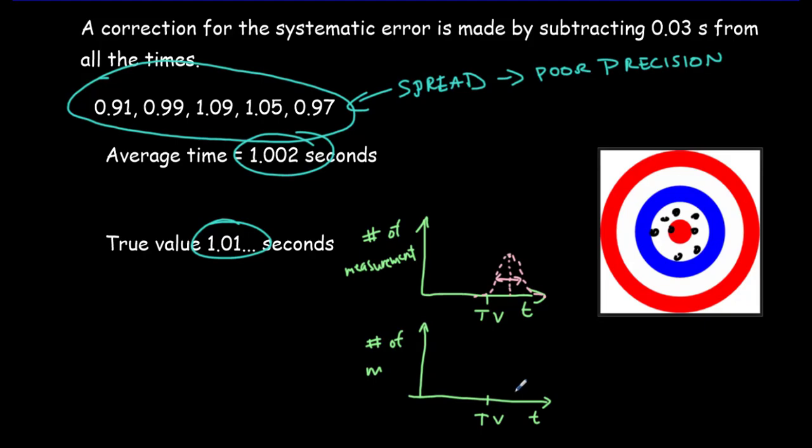So what we've now done is we've moved back by correcting for the systematic error so that our peak lies over top of the true value now. The next thing we'd like to be able to do is make that peak much narrower.